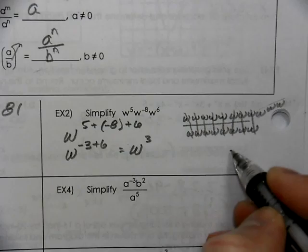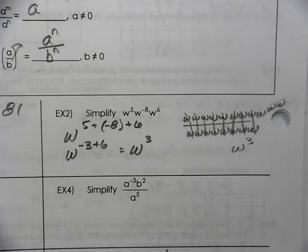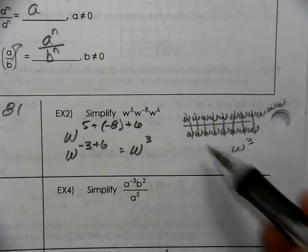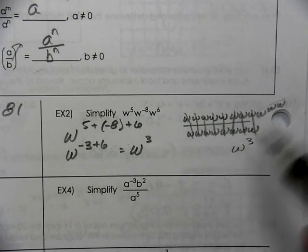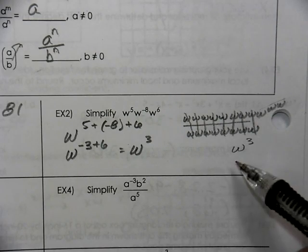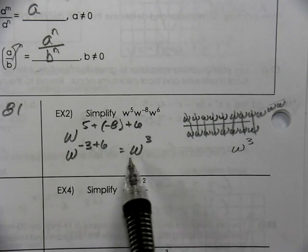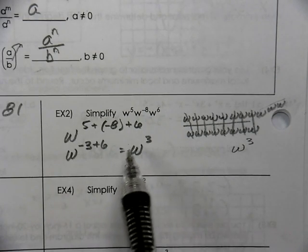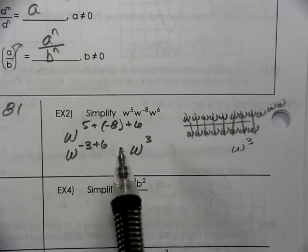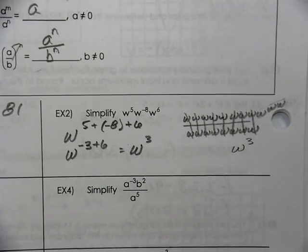When you cross those off, you're left with w to the third power. That's a much more tedious way to get your answer. Or you can just add the exponents — whichever method makes sense to you and you can be consistently accurate.